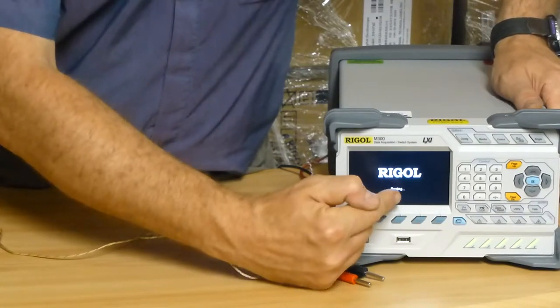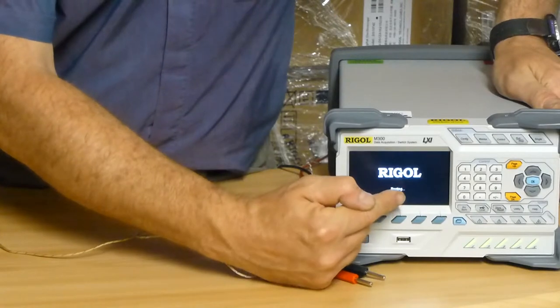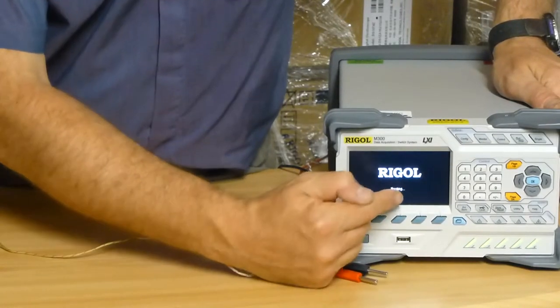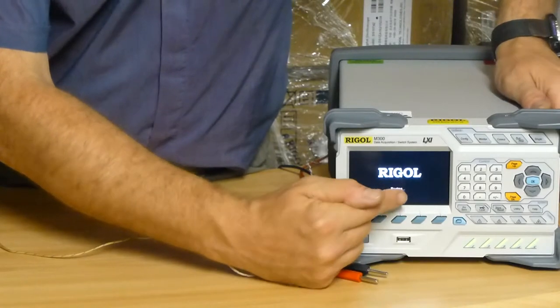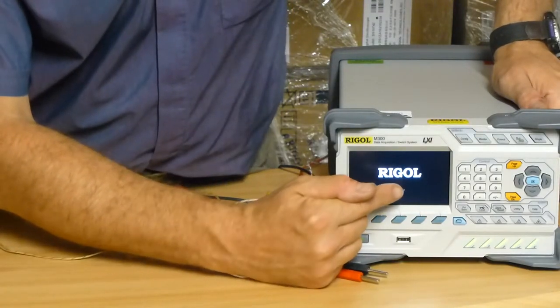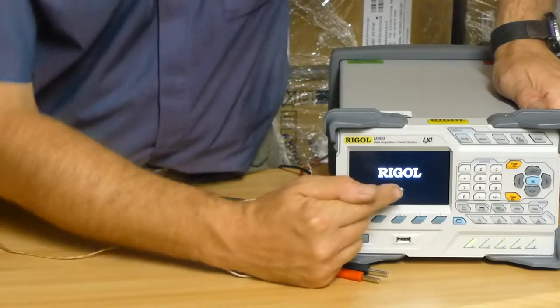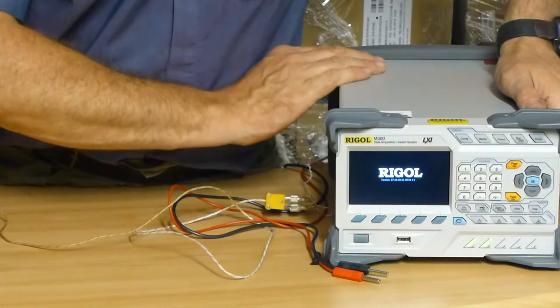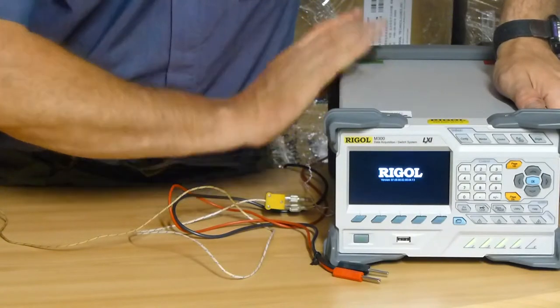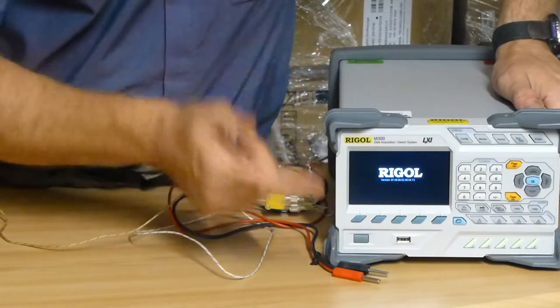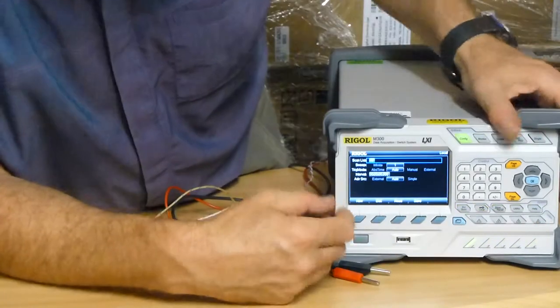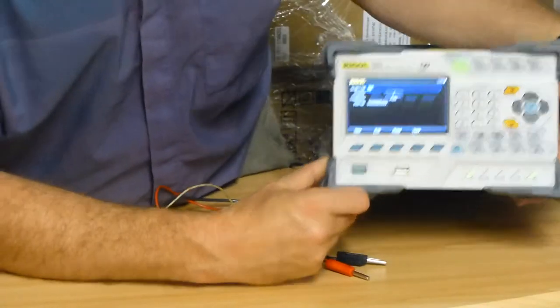You can also measure AC voltage, two-wire resistance, and four-wire resistance with the MC3065 module fitted. With the multiplexer card, we have the option to view up to 32 channels, and I'm going to show you how to configure this to scan across channels.